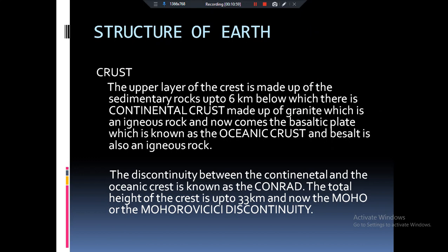Guys, we are going to talk about igneous rocks, sedimentary rocks and the metamorphic rocks in the later classes. Now comes the continental crust. Then the oceanic crust. Continental crust is made up of granite and the oceanic crust is made up of basalt. Both are the igneous rocks.